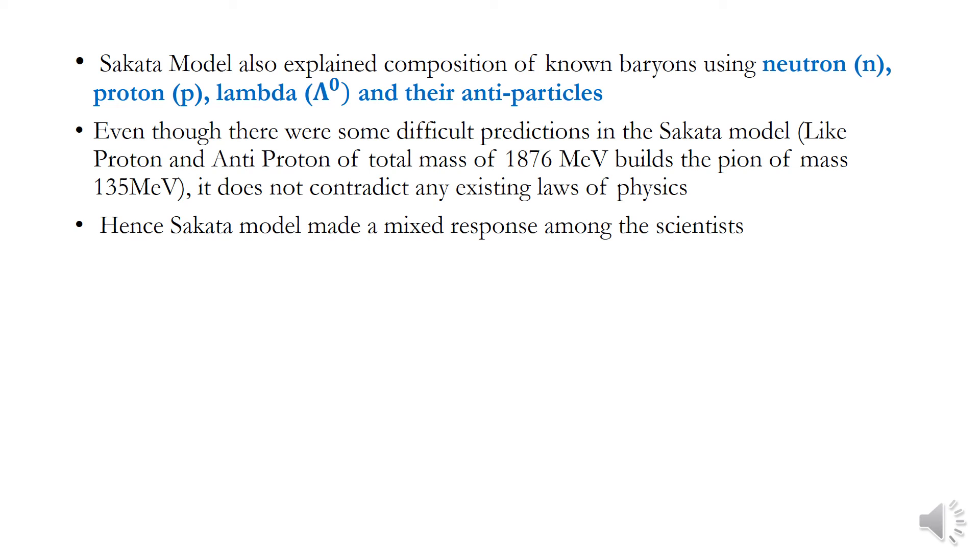Even though there are some difficult predictions in Sakata model, like proton and antiproton produces the pi zero. That means the proton and antiproton of total mass 1,876 MeV builds a pion of mass 135 MeV. That means nearly 1,750 MeV was converted into binding energy.